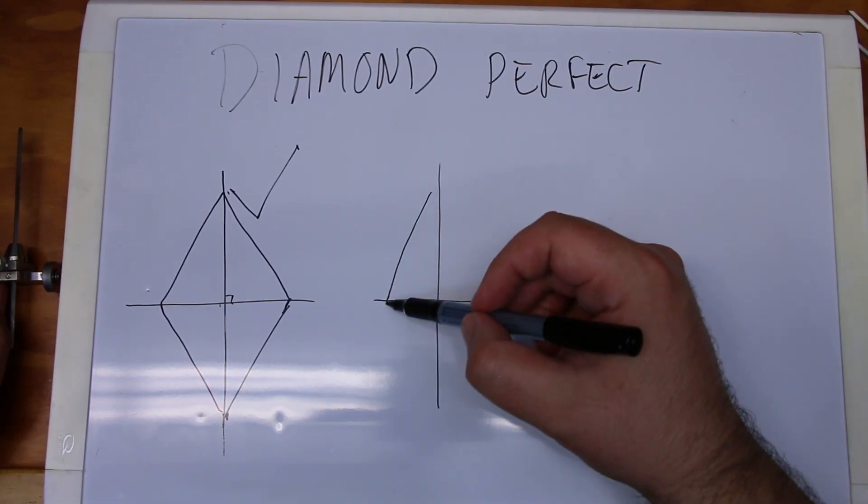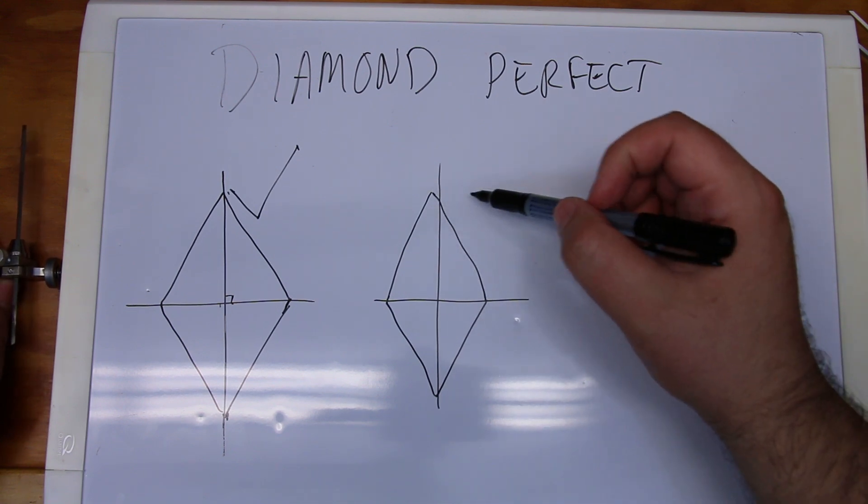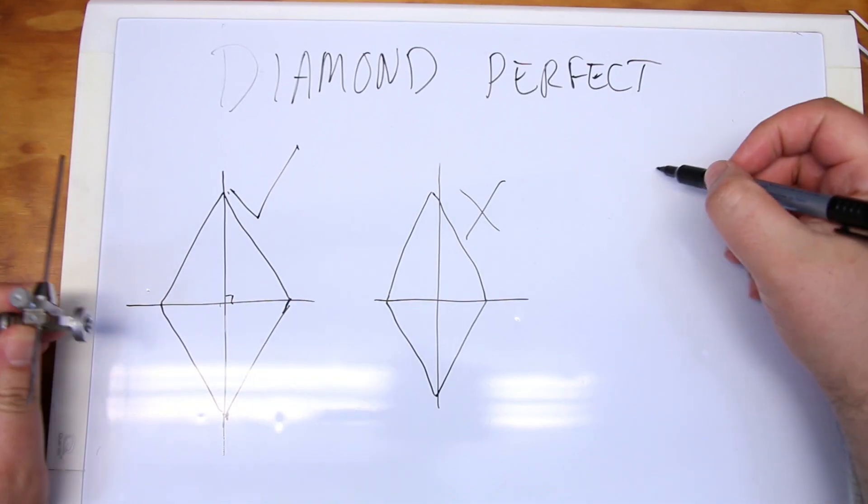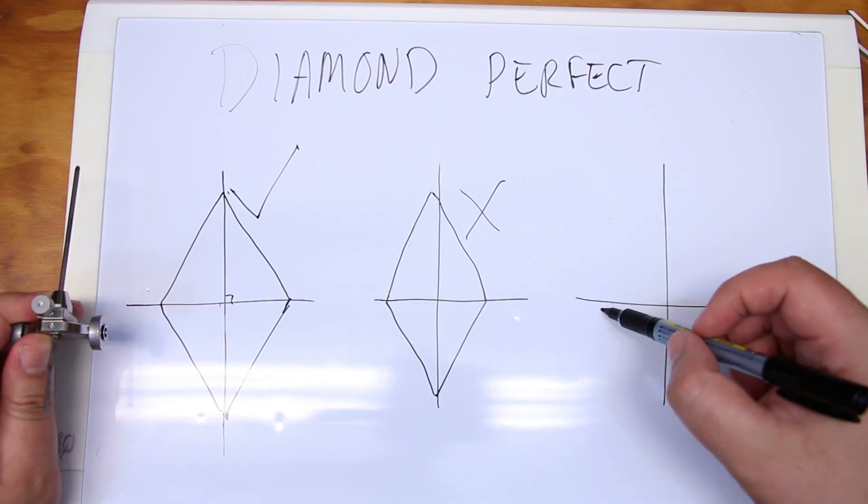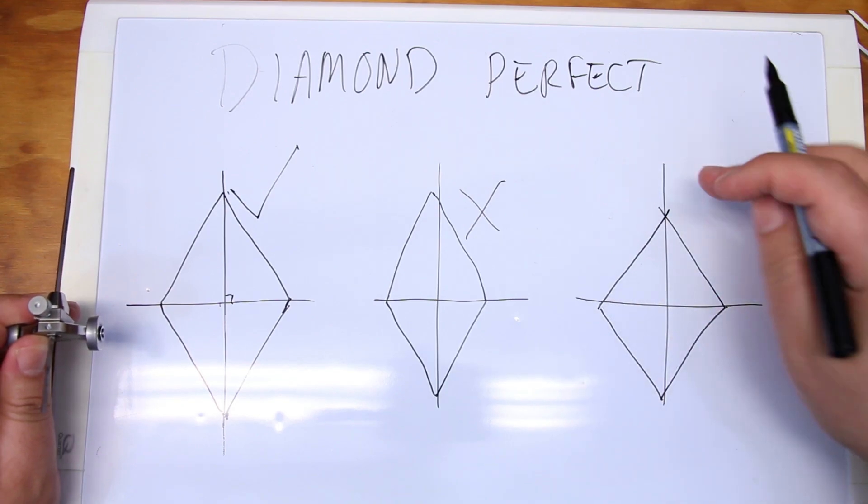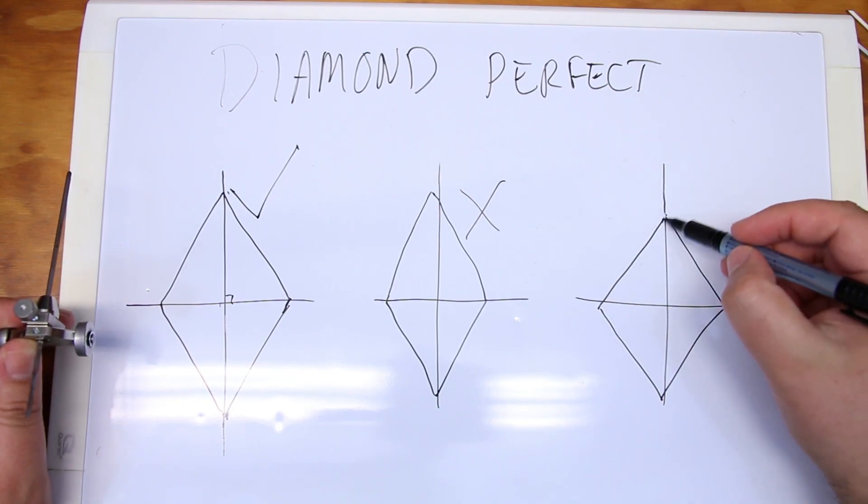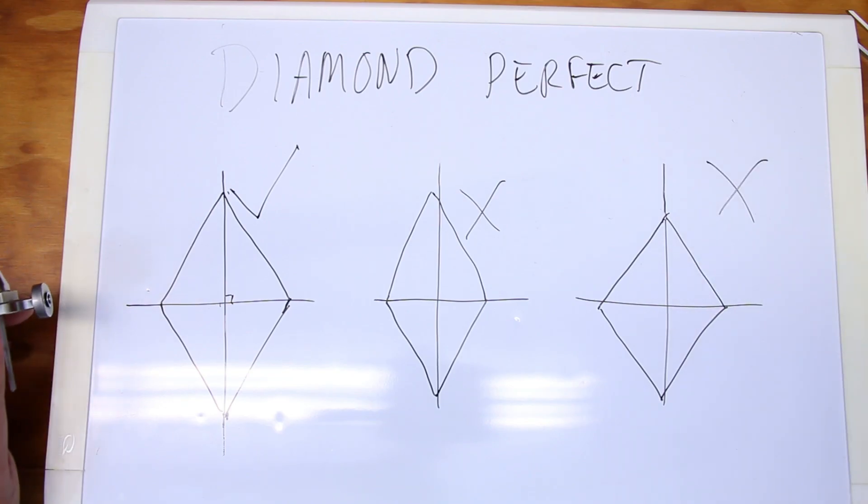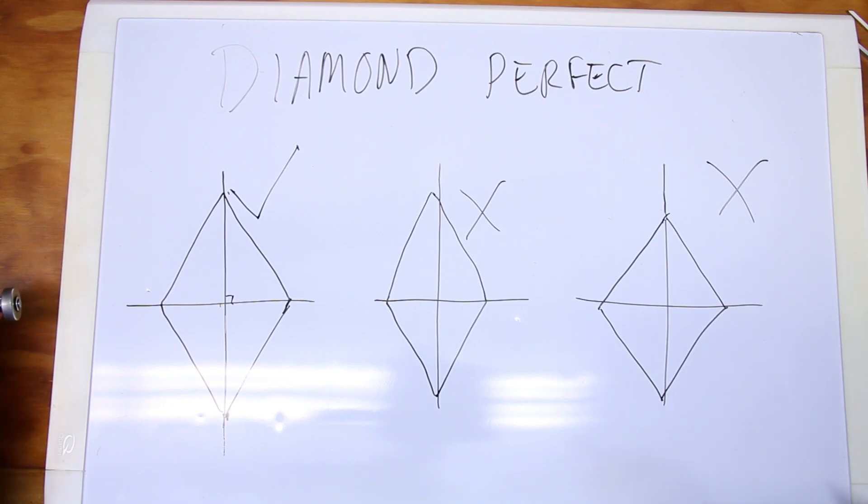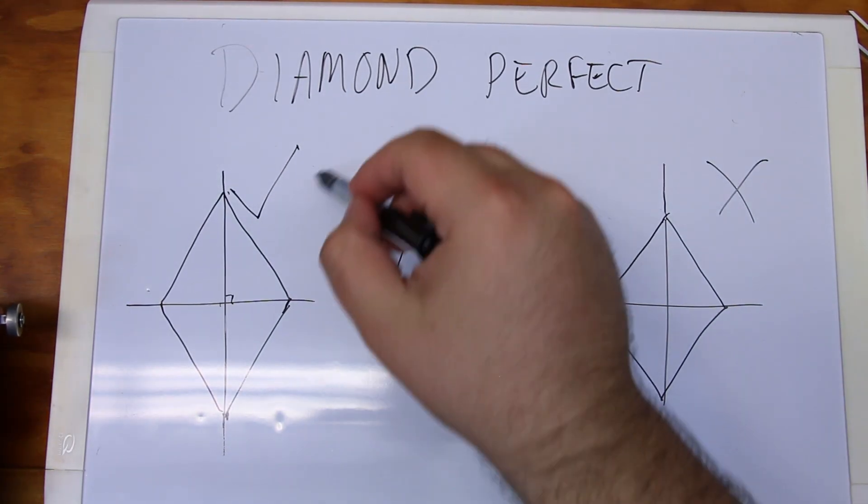What can happen though after sharpening, you'll get a profile something like this, and this is incorrect. So when we're sharpening we have to be mindful of what we're doing, we constantly check our work as we're going along, because at the end of the day we want diamond perfection.